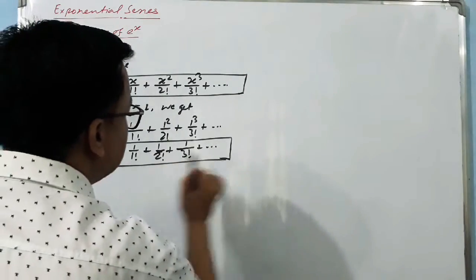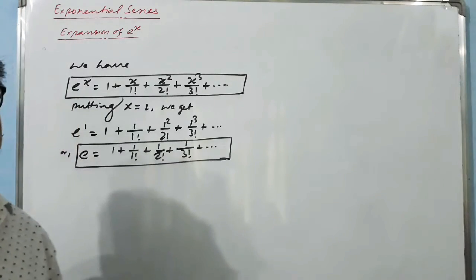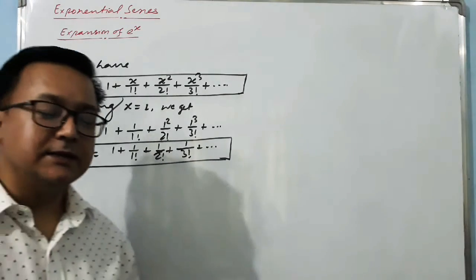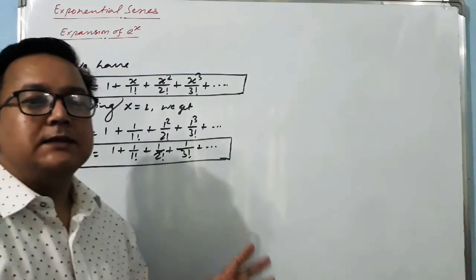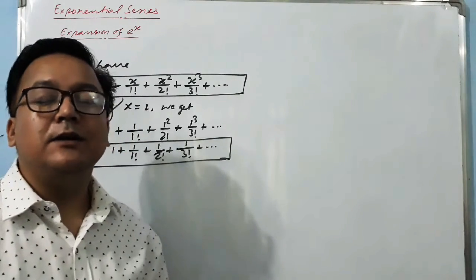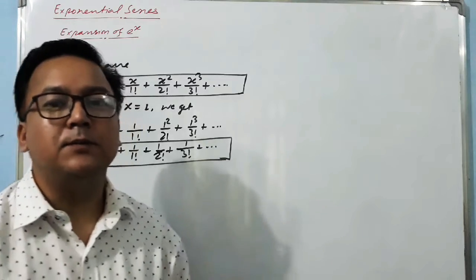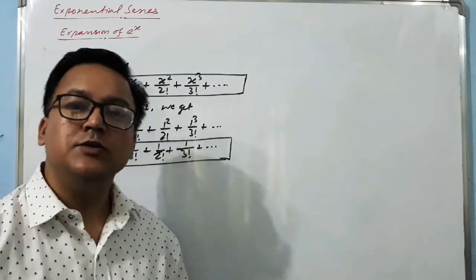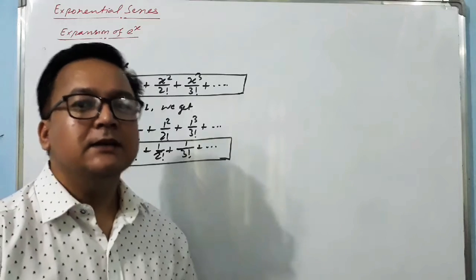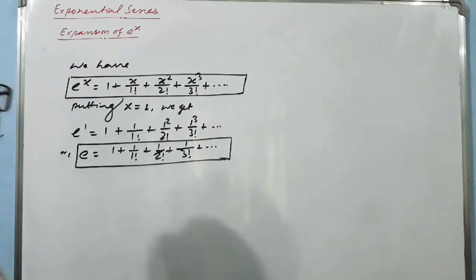So now we can express the value of e in terms of factorials: e equals 1 plus 1/1! plus 1/2! plus 1/3! and so on to infinity. This infinite series sums to the irrational number e. You should memorize this result.